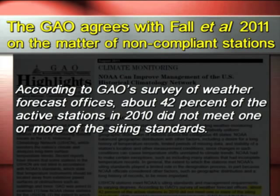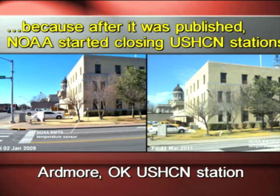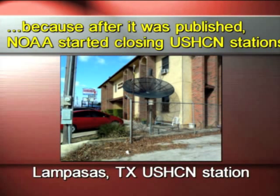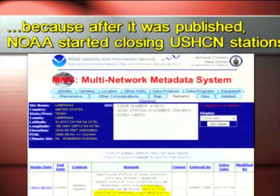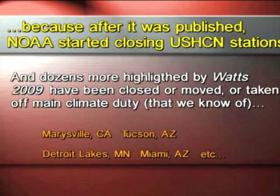42% of the active stations did not meet one or more siting standards versus our 92%. Why the difference? Because NOAA went around after we highlighted many of these stations and started closing sites. In our 2009 publication, we highlighted sites all over the country — for example, Ardmore, Oklahoma, where the temperature sensor was right on the street. They removed it after our publication came out. We found NOAA went around closing or changing how data was handled at many sites. The metadata for Lampasas, Texas now states the data is marginally suitable due to construction and urbanization, and they're looking for a new observer. Marysville, California — the one that got me started on this path — was closed just a few months after we highlighted it.